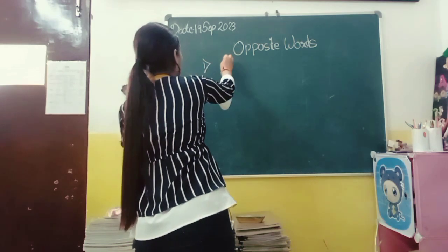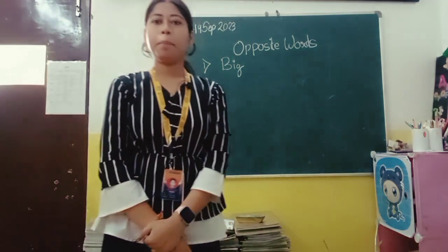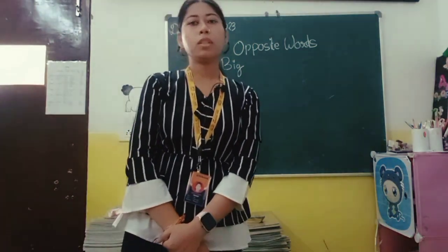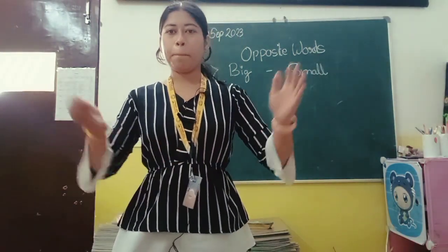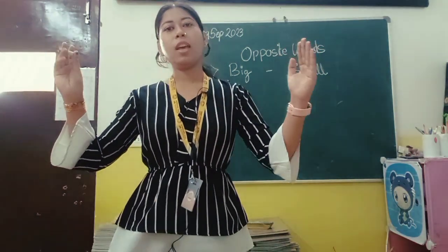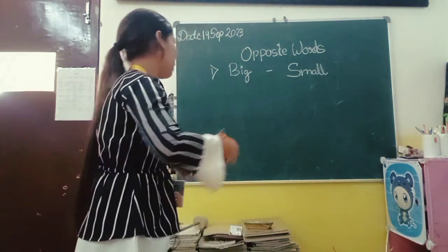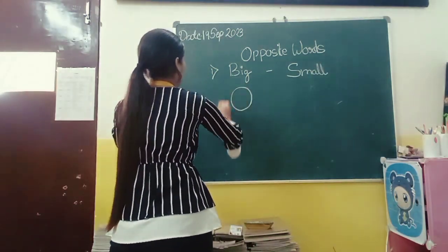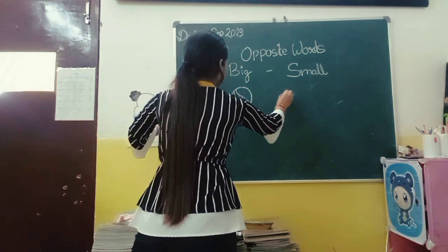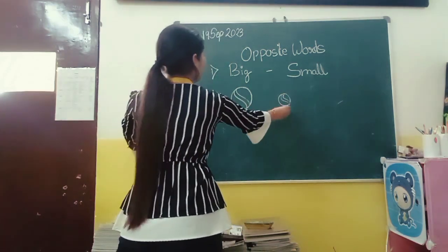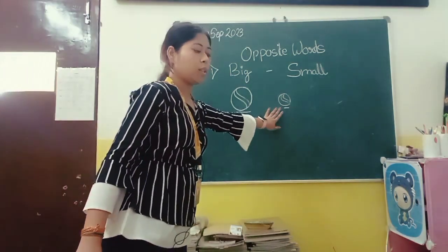That is 'big'. So, anyone knows what is the opposite word of big? First of all, what does big mean? Big means bada. And what is the meaning of small? Small means chota. For example, this ball is big and this is small. In comparison to this ball, this one is small. So this is big and this is small.